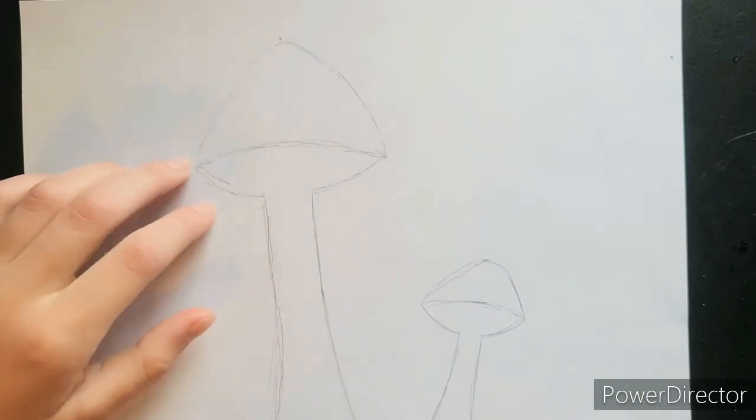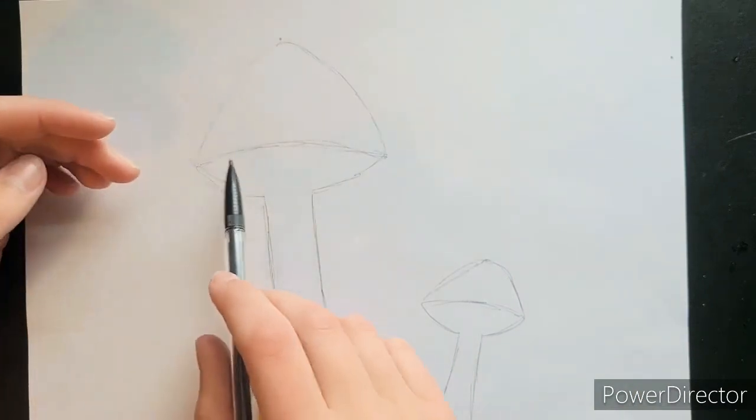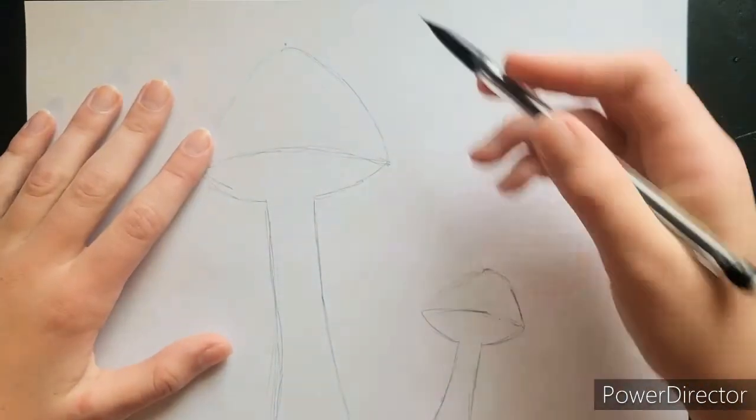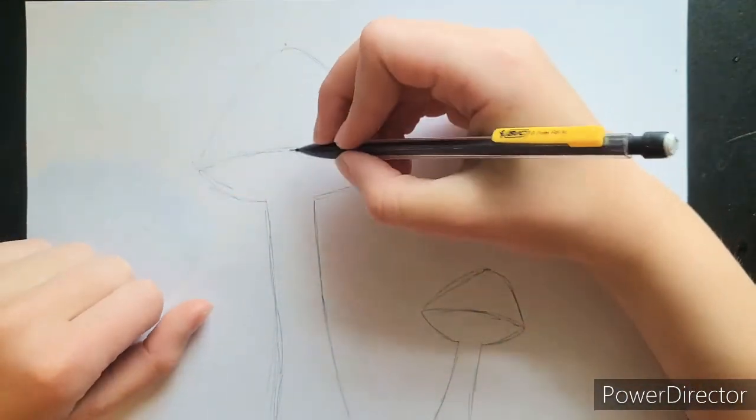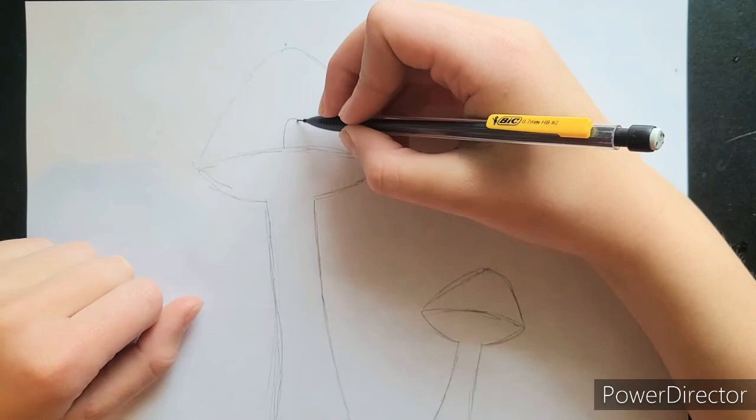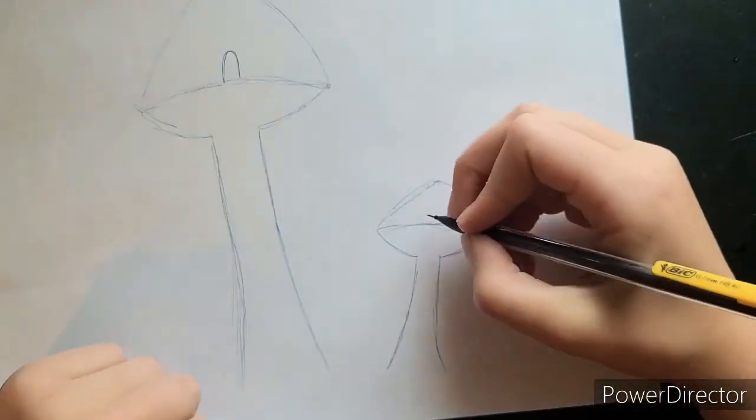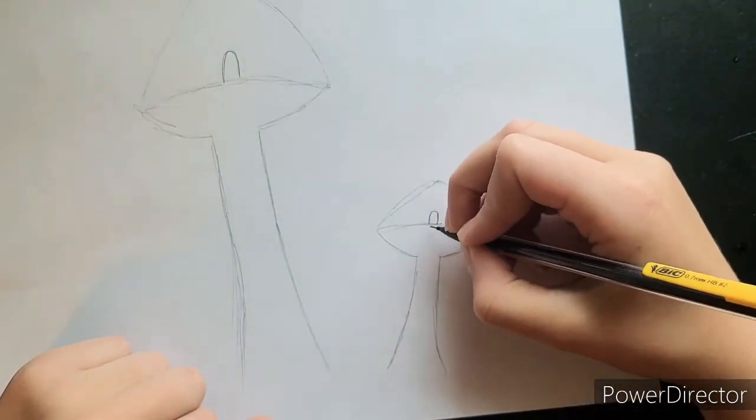Sorry about that, I just fixed this mushroom. This line was a little off. Now we're going to draw a little doorway on this mushroom. This will be one of the homes for the fairies. And down here, we'll draw another doorway.